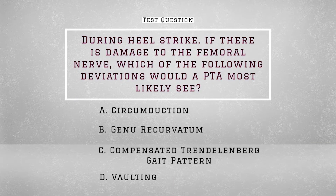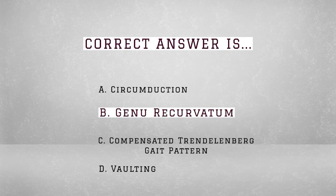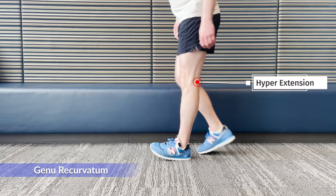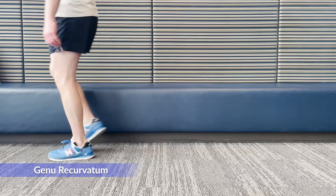Now for the test question: during heel strike, if there is damage to the femoral nerve, which of the following deviations would a PTA most likely see? A) circumduction, B) genu recurvatum, C) compensated Trendelenburg gait pattern, or D) vaulting. The answer is B, genu recurvatum. Damage to the femoral nerve will affect the quadricep muscles, weakening them. During heel strike, this will cause the person to slam their knee back into extension, which leads to genu recurvatum.